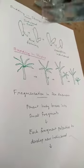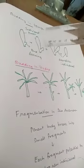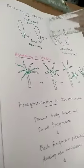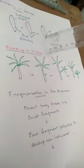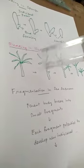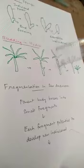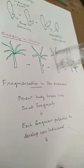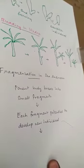Next topic: Budding in Hydra and Sponges. In Sponges, small buds grow on the outside of the parent body. The buds grow larger, and the young buds detach from the parent body to begin new independent life. In Hydra, small buds grow on the parent body through repeated mitotic cell division. They grow to form a mouth and tentacles. The young Hydras detach from the parent body and develop into new individuals.